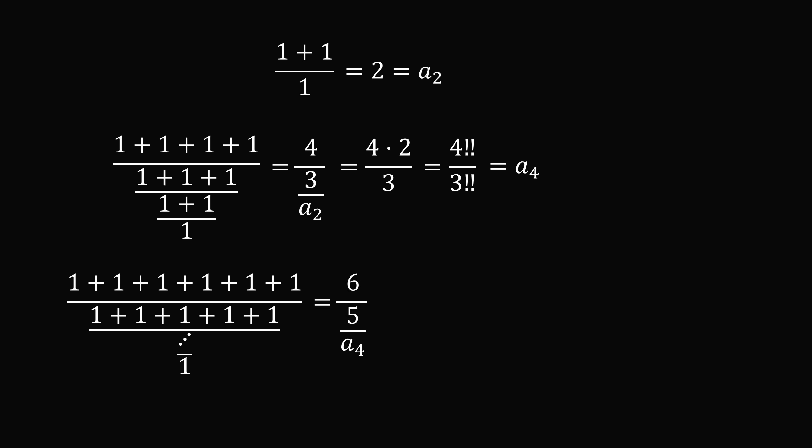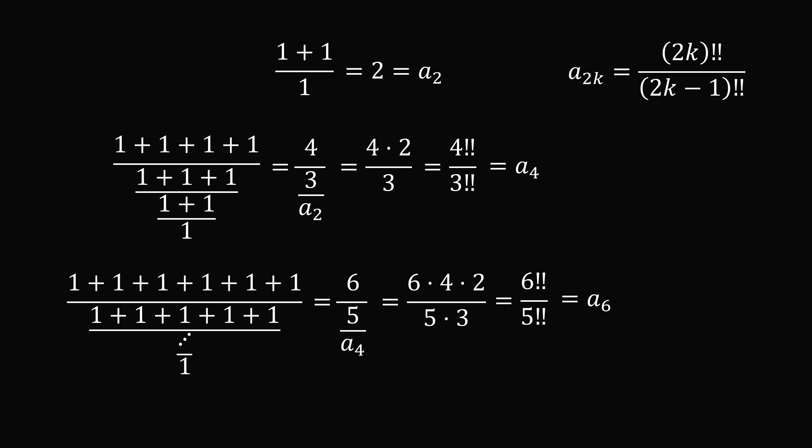What about a6? This is equal to 6 divided by 5 over a4. a4 is equal to 4 double factorial divided by 3 double factorial. Substituting in, we get 6 times 4 times 2, all over 5 times 3. So this is equal to 6 double factorial over 5 double factorial, and that's a6. So if we continue this pattern, we'll see that a2k is equal to 2k double factorial all over 2k minus 1 double factorial.